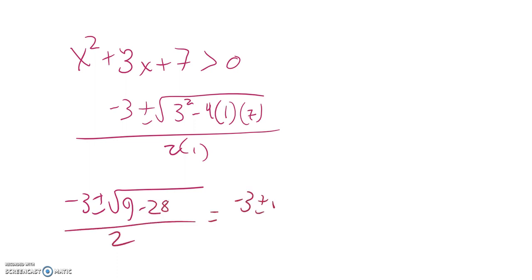So I got 3 plus or minus square root of a negative number. That means no solution. That doesn't mean there's no solution to this. That means there's no solution to this being equal to zero.